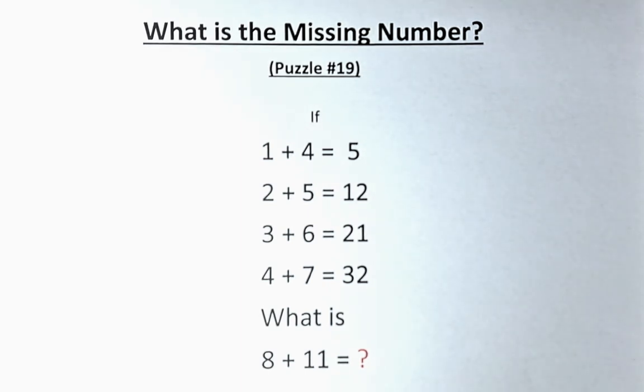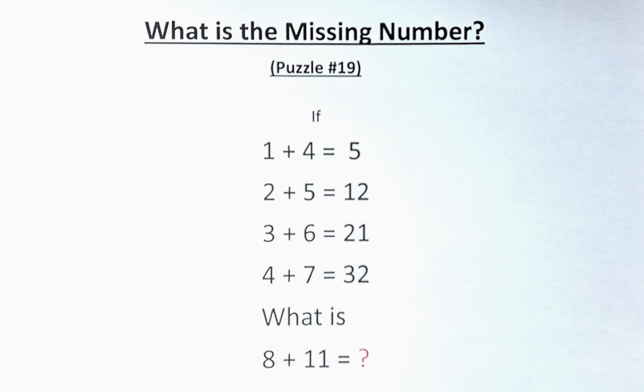If 1 plus 4 equals 5, 2 plus 5 equals 12, 3 plus 6 equals 21, and 4 plus 7 equals 32, what then is 8 plus 11?